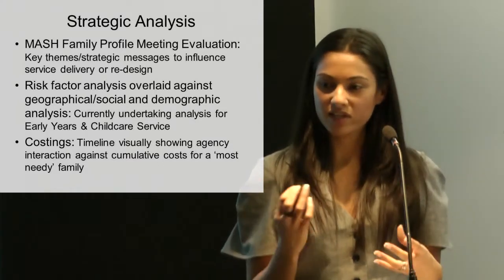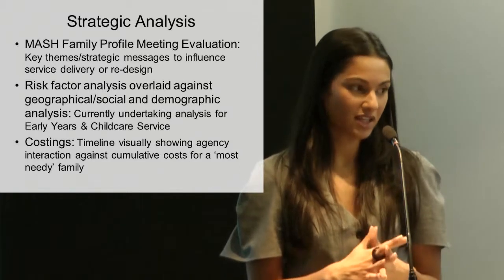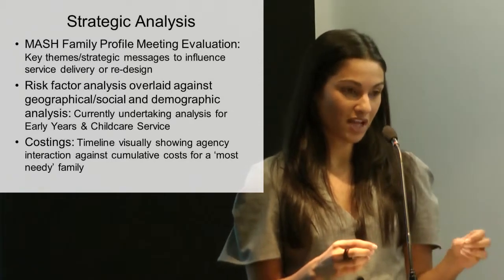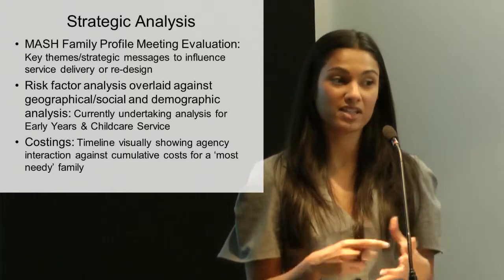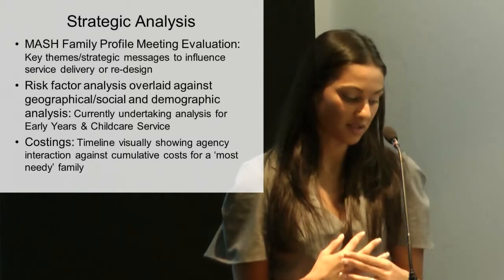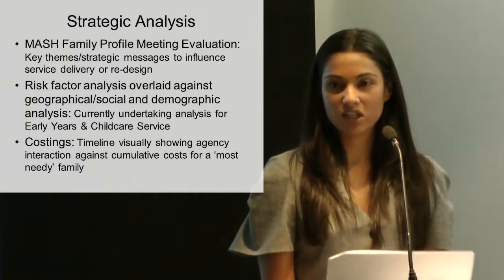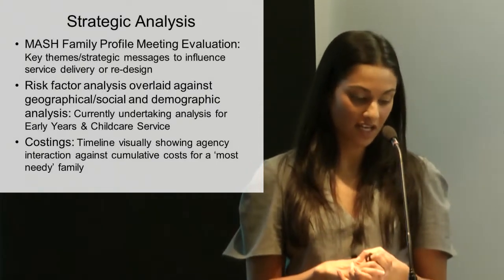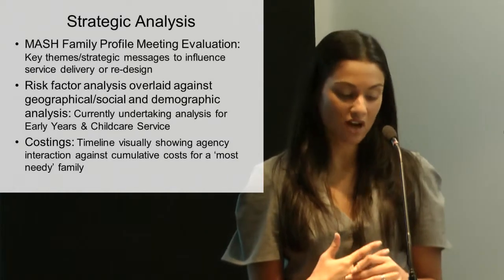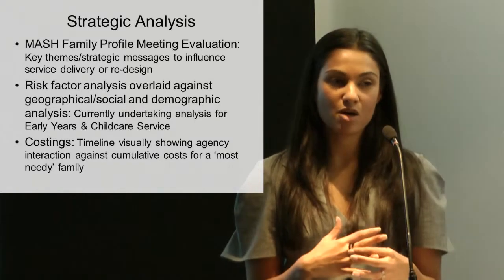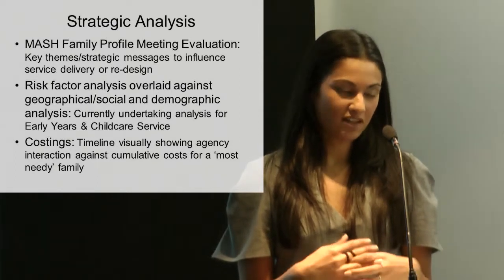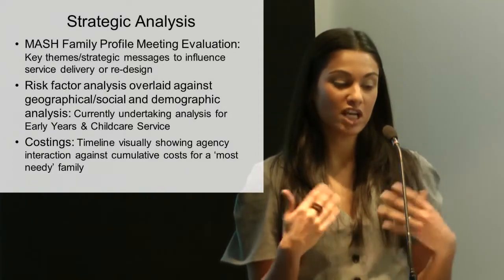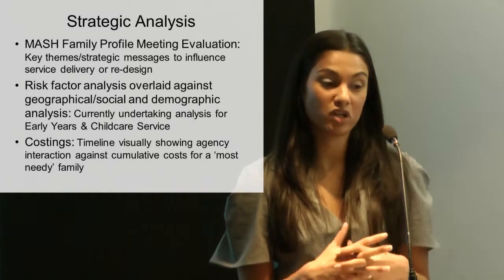One of the strategic themes emerging is that there does seem to be a gap in service provision between those level 3 child protection cases and those level 2 services, for families that are persistently problematic and well known to not want to engage. The other piece of work we're doing is using that risk factor analysis and overlaying it against that social and geographic demographic analysis, starting with early years and childcare services — particularly looking at 0 to 5 year olds — to find out what exactly the picture of harm looks like for that age group if we want to truly intervene at a much earlier stage.